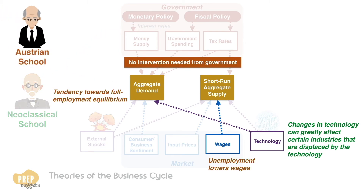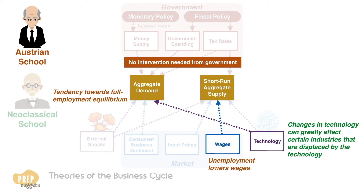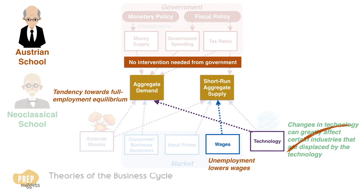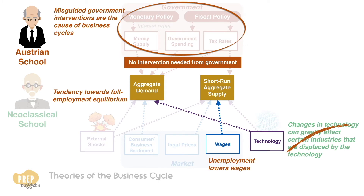Economists of the Austrian school share most of the beliefs of the neoclassical school. The key difference is that Austrian economists argue that business cycles are not a result of changes in technology, but misguided interventions by the government. When policymakers force interest rates down to artificially low levels, firms invest too much in speculative lines of production.